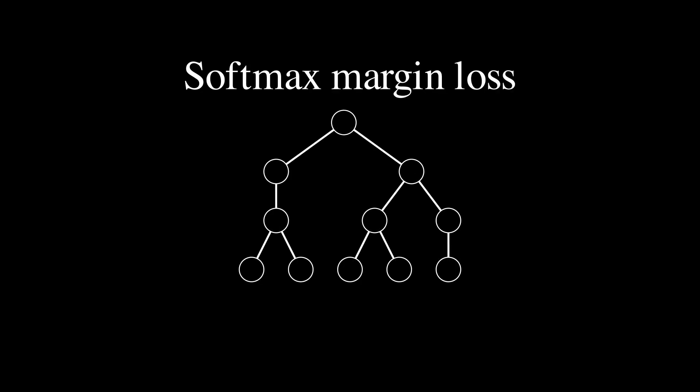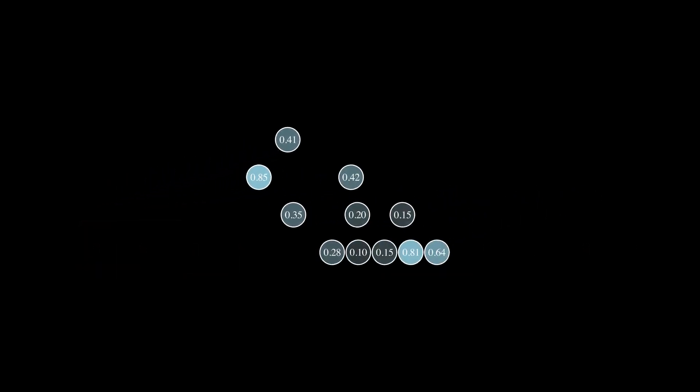The last loss we will cover is called the softmax margin loss. It starts in a familiar way. As in the previous one, the network's output layer has the same number of neurons as there are nodes in the entire tree. But unlike the previous one, we are not going to do anything with them just now. Let's store the logit tree for future use.